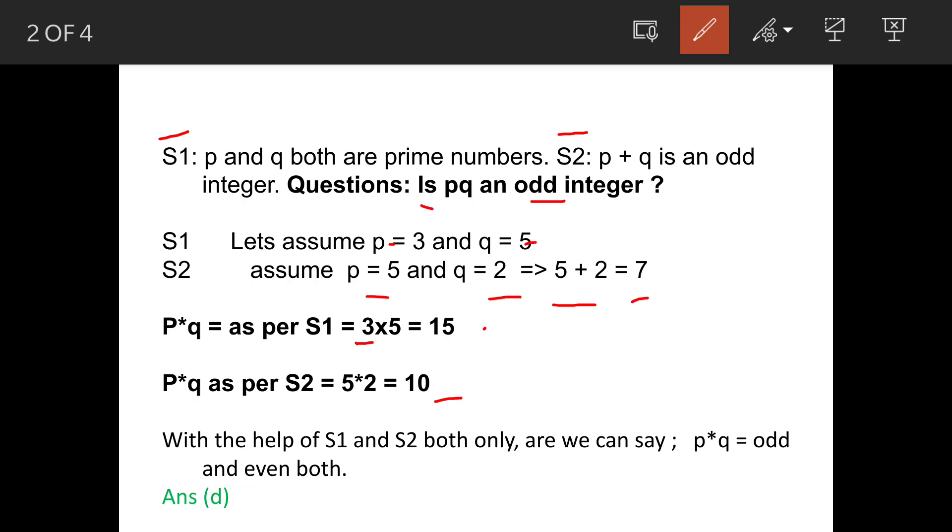To confirm the answer to this question, we need help of both the statements. Then only we can say whether the multiplication pq is odd or even. So the answer is option D.